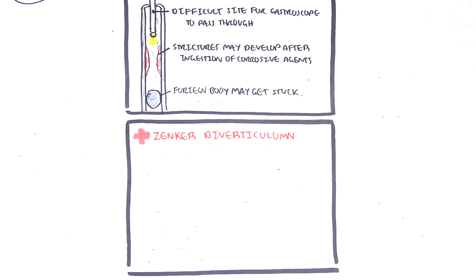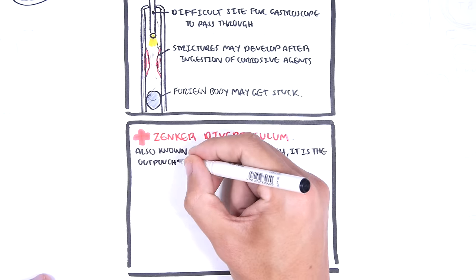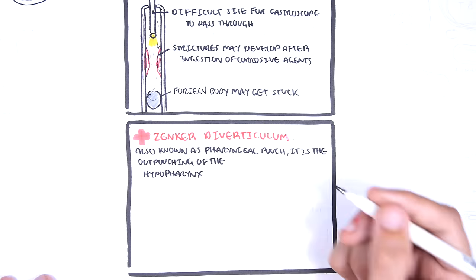Zenker's diverticulum, also known as the pharyngeal pouch, is the outpouching of the hypopharynx.